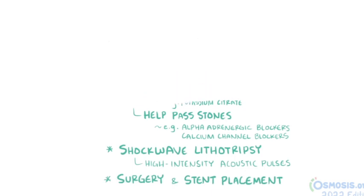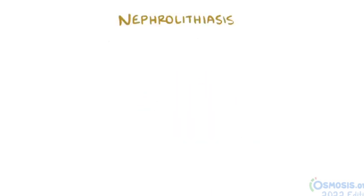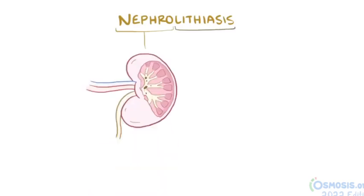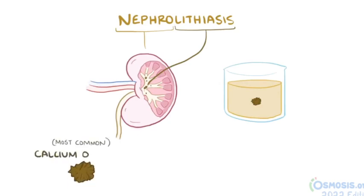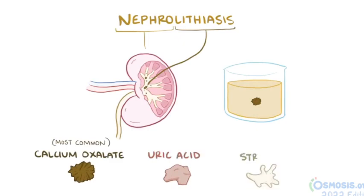As a quick recap, nephrolithiasis is the formation of kidney stones, which form when solutes precipitate out into crystals in the urine. The most common type of stones are calcium oxalate stones, though other types include uric acid stones and struvite stones.